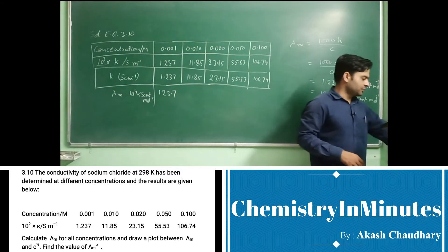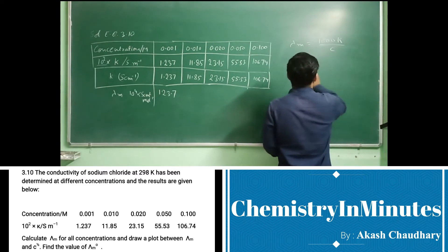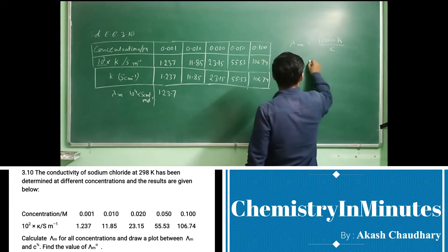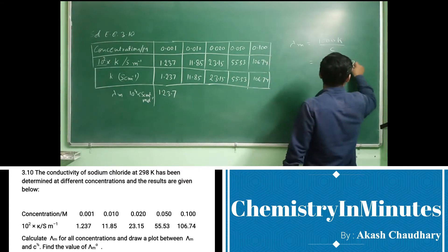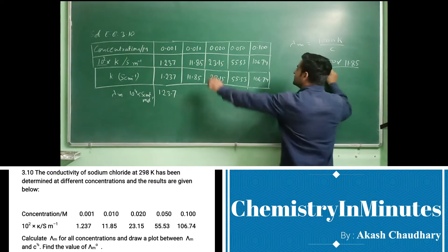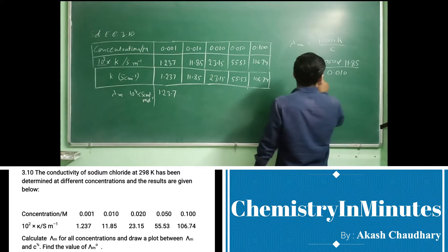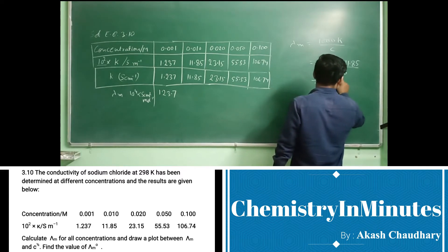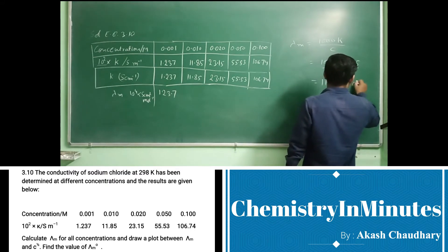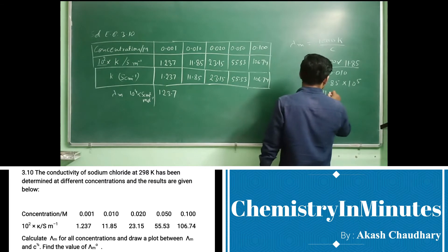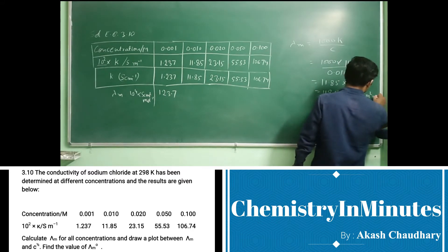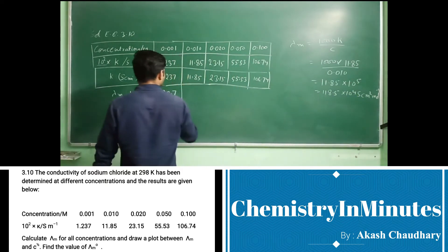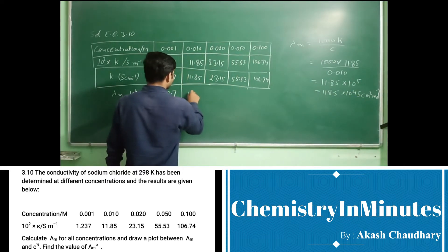For the next part, lambda m equals 1000 k divided by c. So 1000 times 11.85 divided by c, where concentration is 0.01. This gives 11.85 times 10 to the power 5, or 118.5 times 10 to the power 4 siemens centimeter squared per mole. So in the next column we write 118.5.